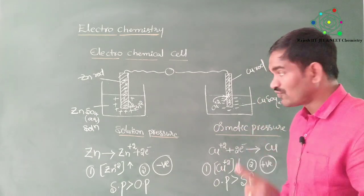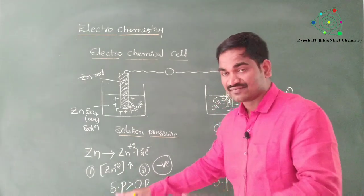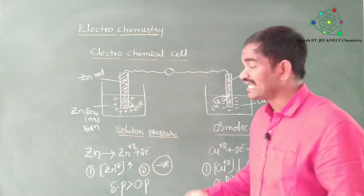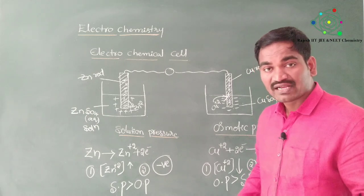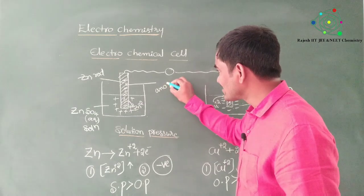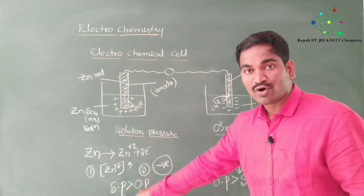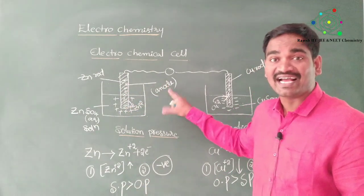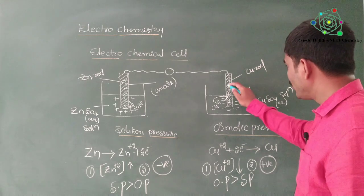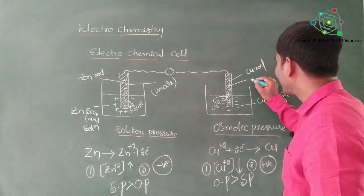One more important point: when solution pressure is high, then the metal rod becomes negative, and that metal rod acts as an anode. When osmotic pressure is more, that metal rod acts as a cathode. This is a very simple concept.